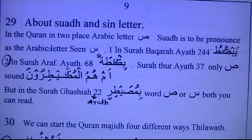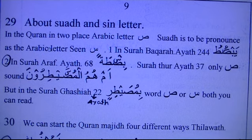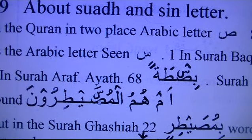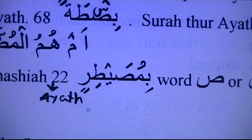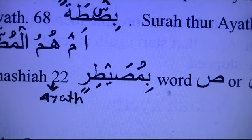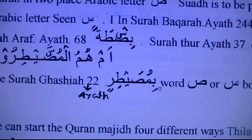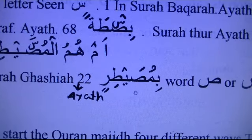Surah At-Tur, ayat number 37 has only the Sad sound: 'Al-Musaytiroon'. You have to remember these things, otherwise you'll be confused. 'Al-Musaytiroon' can be with Sad or Sin — but only in Surah Al-Baqarah ayat number 22. You cannot do both forms in At-Tur.